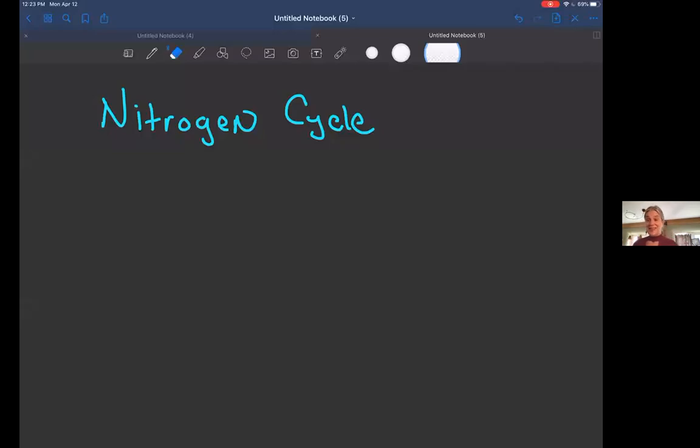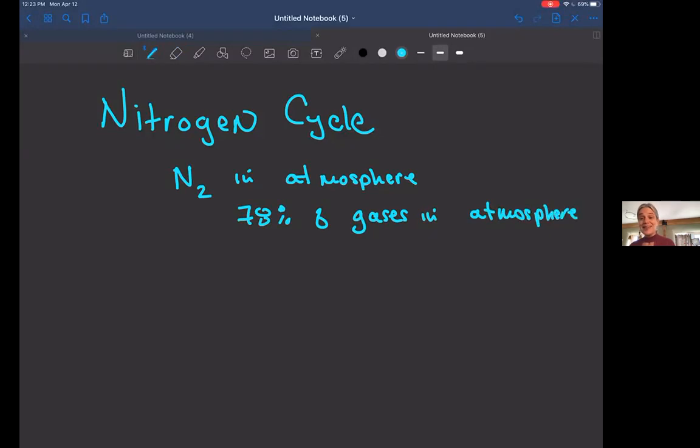Nitrogen is another element that has biogeochemical cycles. Just like carbon dioxide is in our atmosphere, so is nitrogen in the form of a gas, N2. It is actually the most abundant element in our atmosphere, making up 78% of the gases in the atmosphere. We are breathing in nitrogen gas all the time, but we cannot take it up into our bodies, so we have to get nitrogen from another way.